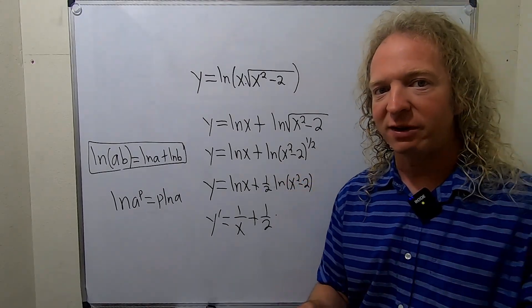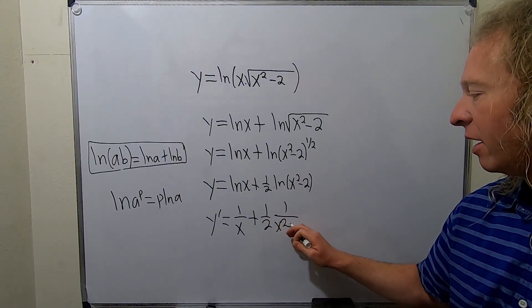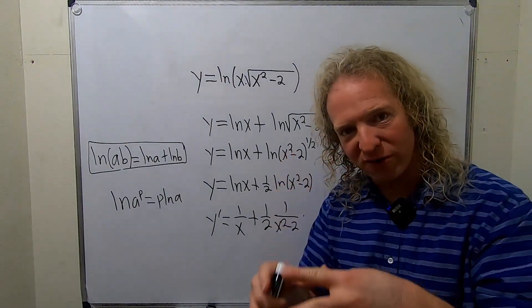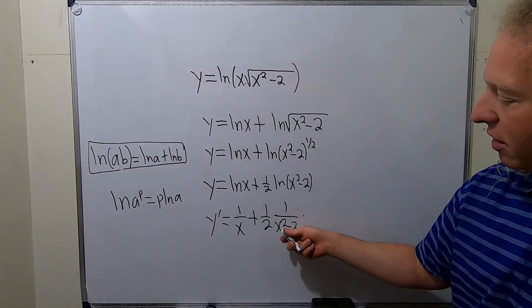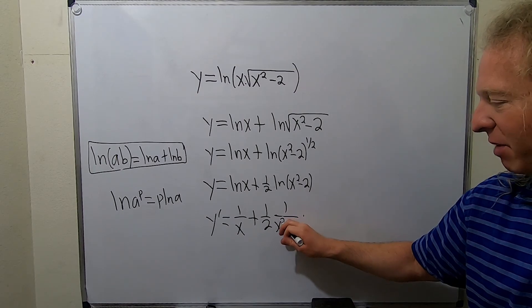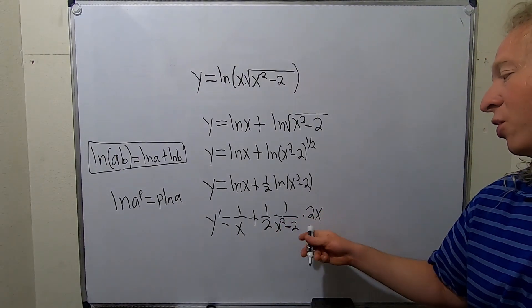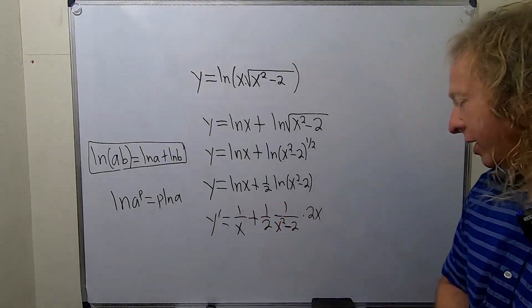Remember, the derivative of ln x is 1 over x. So it's 1 over this times the derivative of the inside function. The inside function here is x squared minus 2. So the derivative of x squared is just 2x, and the derivative of negative 2 is 0, so we don't write it.